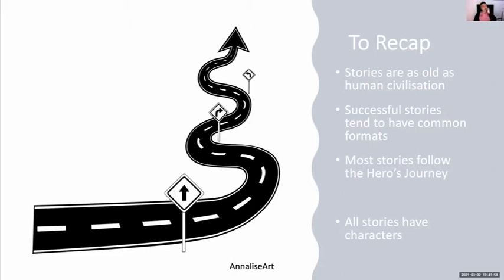In the second talk, The Hero's Journey, we discussed the theory that most stories follow a similar pattern — certainly those that are most successful or most remembered. Your main character's world is disrupted, they go on a journey meeting different obstacles, they may or may not reach their goal, and then they return home, usually as a changed person. In this talk, we'll be talking about the types of characters they might meet on their adventure, as well as the main characters themselves.